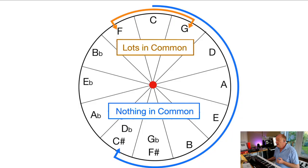So if you're going to try and change key, or the bridge to your song wants to be in a different key, what are the ones which are going to be closest to you? And which are the ones going to be furthest away and most jarring? The ones closest together have got lots in common, and the ones furthest away have got very little in common. This is how it works in practice.